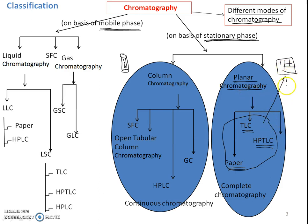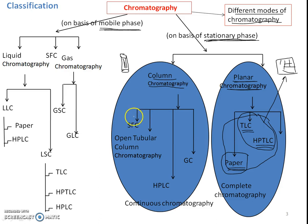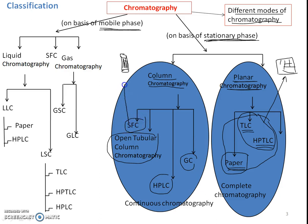In planar chromatography, a flat surface having a thin layer of adsorbent is used as the stationary phase. In paper chromatography, it is a thin sheet of paper. Whereas in TLC and HPTLC, a thin layer of adsorbent is coated onto a supporting glass or plastic support. In column chromatography, the adsorbent material is embedded into the column — examples include open tubular column chromatography, HPLC, gas chromatography, and supercritical fluid chromatography.